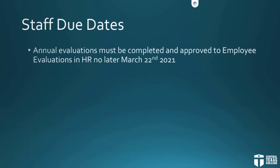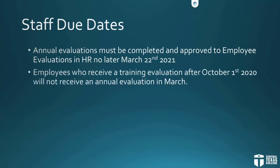Due dates for this year's evaluation is March 22nd — that means the form has to be in HR no later than the 22nd, not that you started on the 22nd. Allow yourself some time in case the form has to bounce back and forth for corrections. Employees who receive a training evaluation after October 1st, 2020, will not receive an annual evaluation in March — if they're too close together, there's no need to do another one.